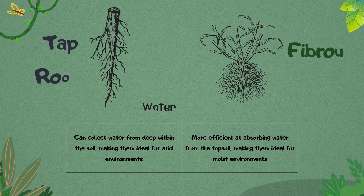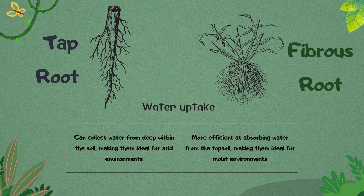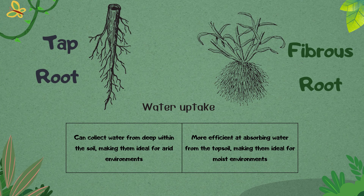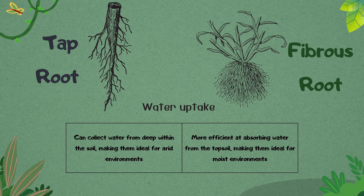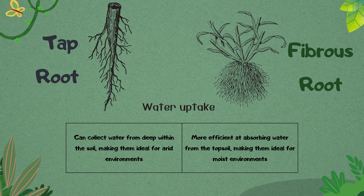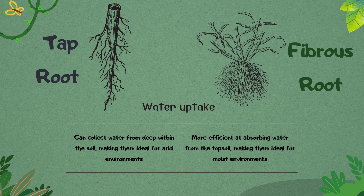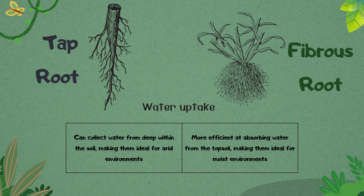Taproots can collect water from deep within the soil, making them ideal for arid environments, whereas fibrous roots are more efficient at absorbing water from the topsoil, making them ideal for moist environments.